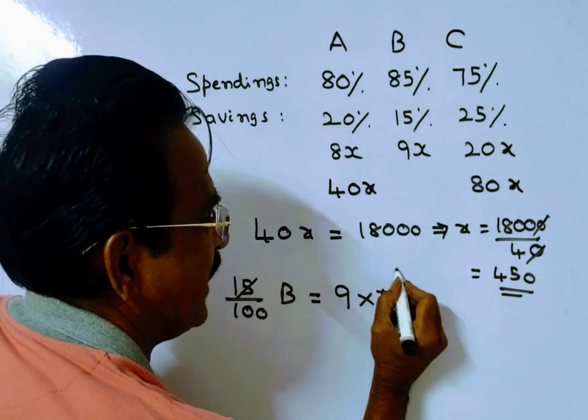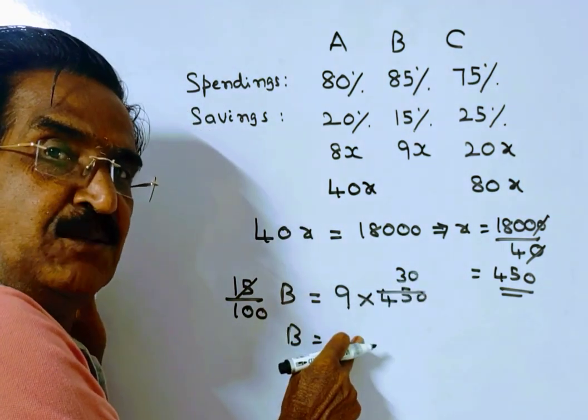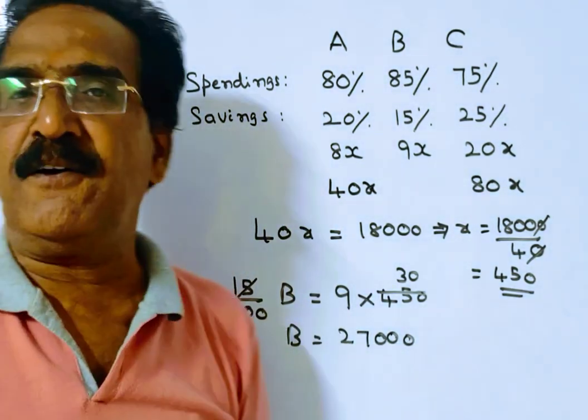So 15 into, so B is equal to 9 times, 9 into 450 is 4050. 100 by 15 into 4050 equals 27,000. This is the income of B.